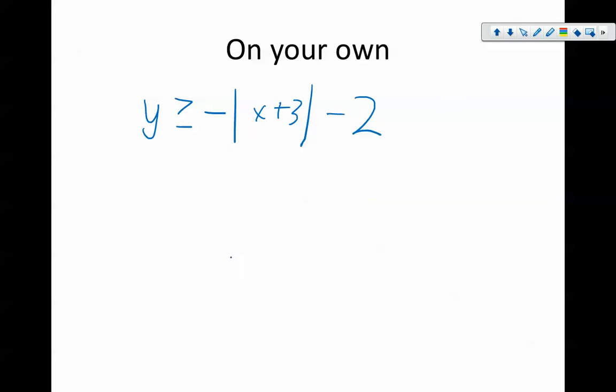Here's our last practice problem right here. Again, it is absolute value. We are filling in this formula: a times the absolute value of x minus h plus k. My a value is negative 1 because there's a negative there.